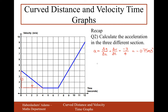For part b, the acceleration is 0 — we know this because the velocity is not changing, or the gradient is 0 on this graph. For the third section, the difference in y is going from 1 up to 9, that's an increase of 8, and from 7 to 12, that's an increase of 5. So we do 8 divided by 5, which gives 1.6 metres per second squared.